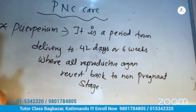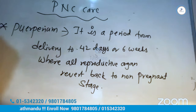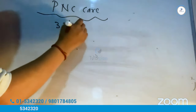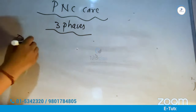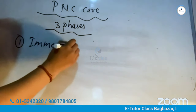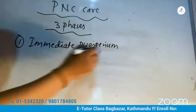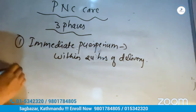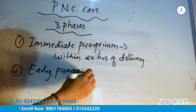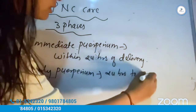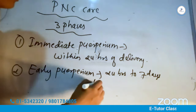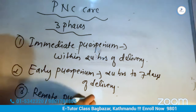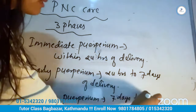There are three phases of the puerperium. The first phase is the immediate period — within 24 hours of delivery. The second is early — 24 hours to 7 days after delivery. The third is remote — 7 days to 42 days.